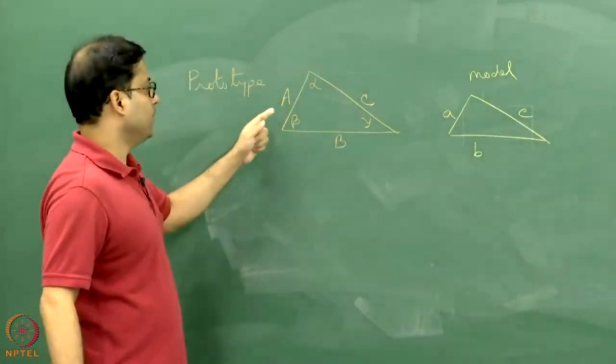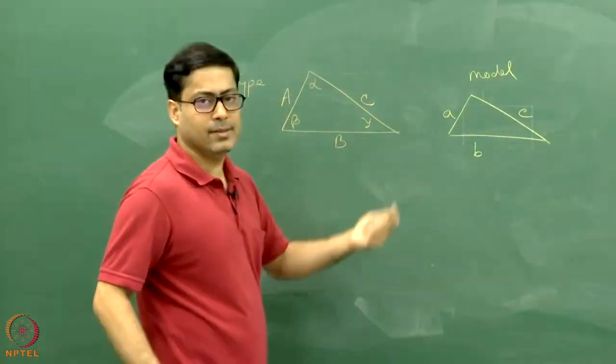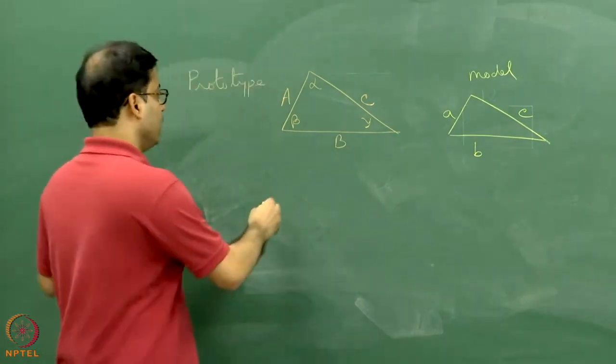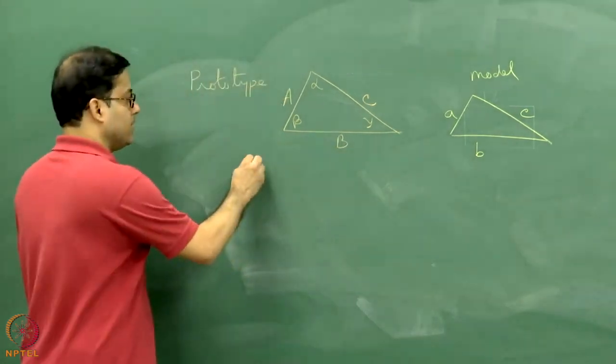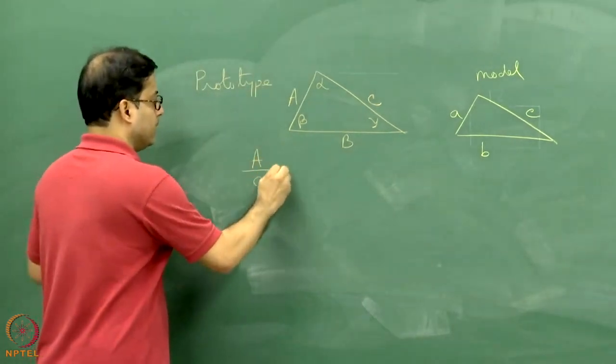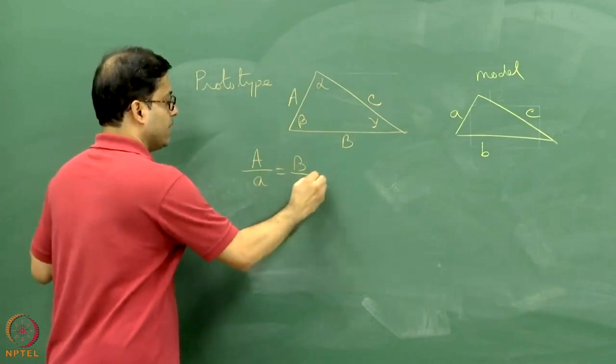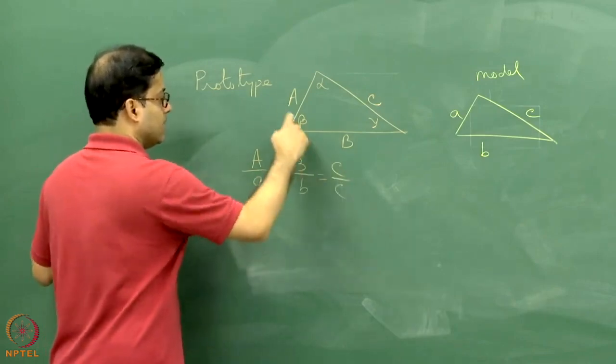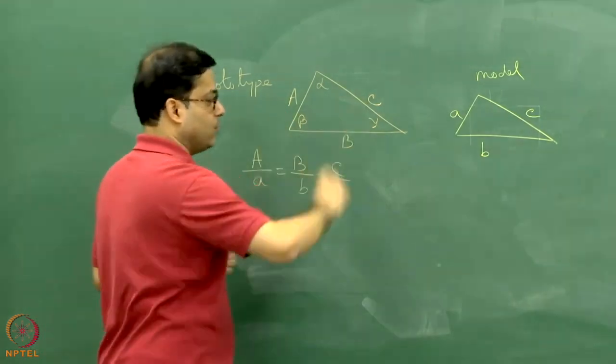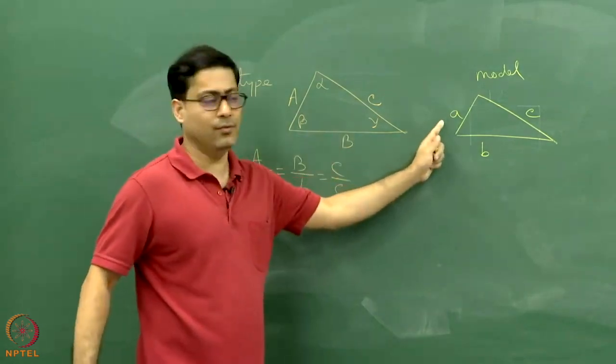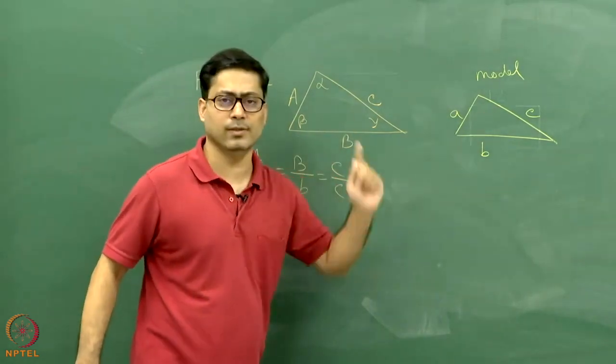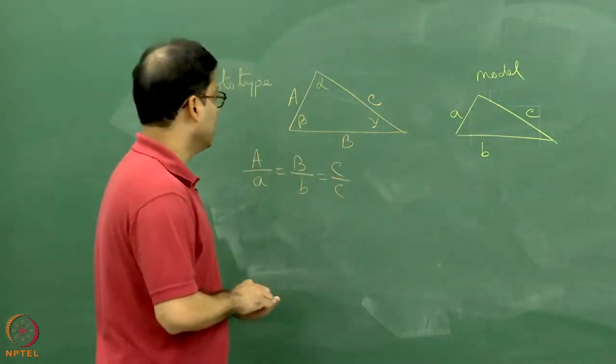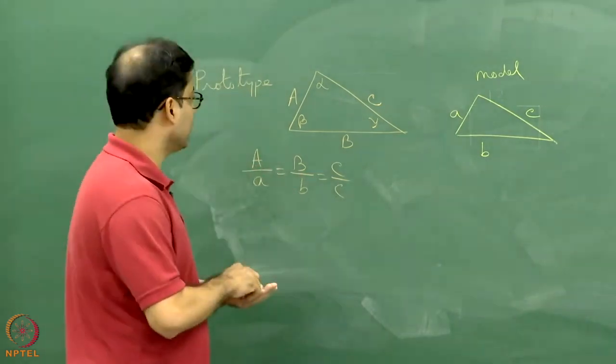What will be the relation between capital ABC and small abc? As I told you just now, as per geometric similarity principle, I have to maintain this relationship. Capital ABC length I have no control, whereas in the laboratory I have full control on small a, b, and c lengths. What about the angles? That is why I was talking here.